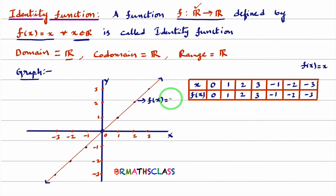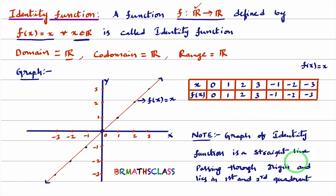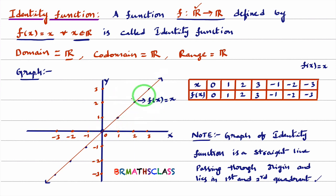The graph of the identity function is a straight line passing through the origin, lying in the first and third quadrants. In this class, we learned the definition of identity function, the domain, co-domain, and range of the identity function, and how to draw its graph. In the next class, we will learn the definition of the modulus function, its domain, co-domain, range, and how to draw the graph of the modulus function.